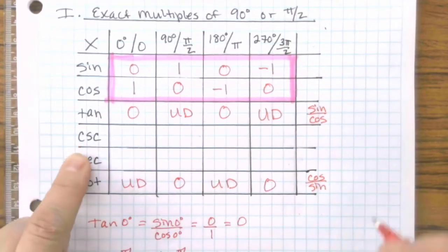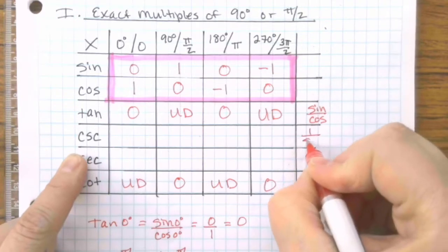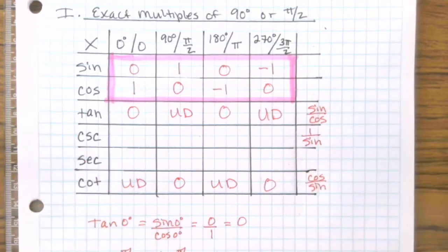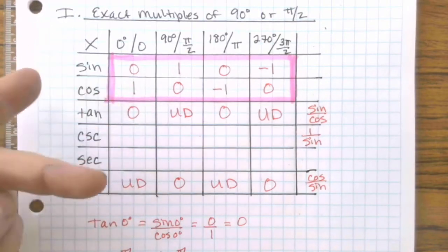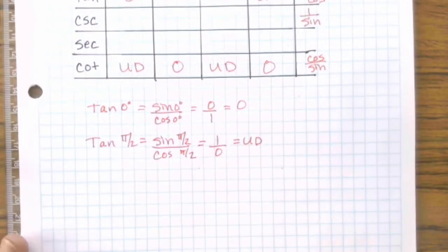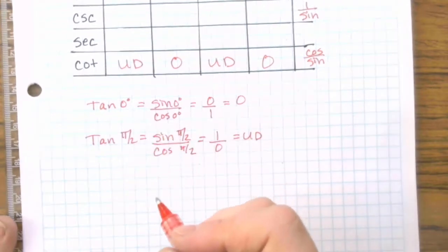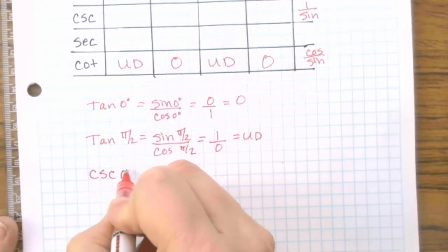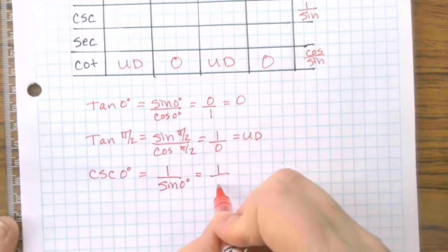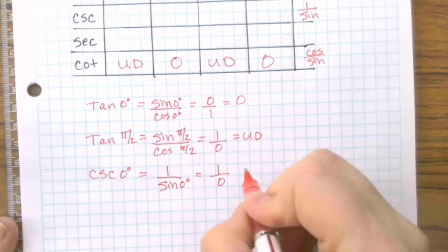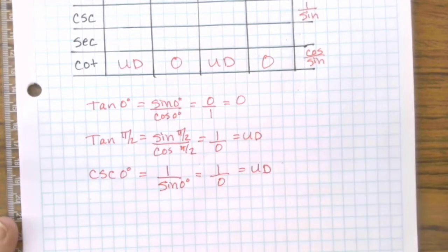Remember that cosecant is the reciprocal of sine. So if you just take your sine answer and flip it, you have cosecant. So sine of 0 is 0. If you're looking for cosecant of 0 degrees, cosecant is 1 over sine of 0 degrees. Sine of 0 is 0. You can't divide by 0, so it's undefined.